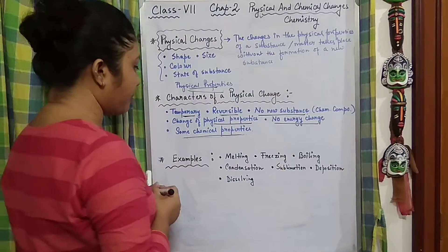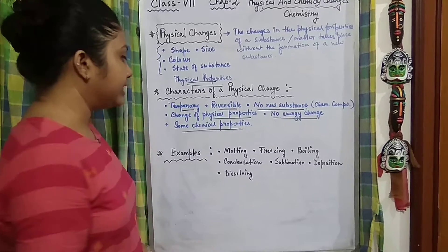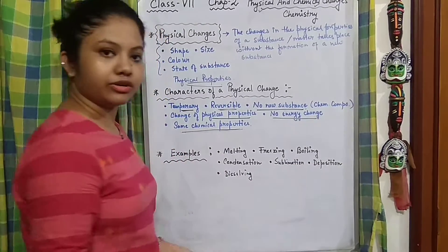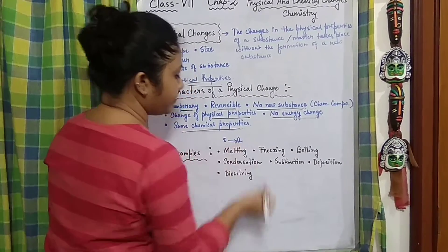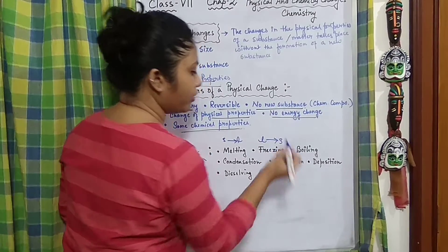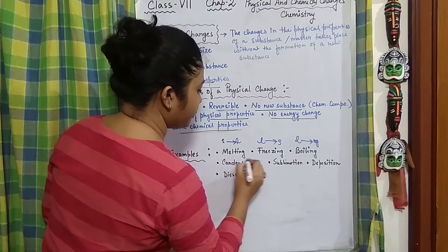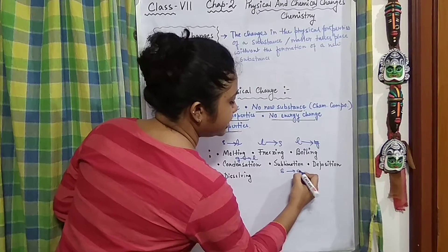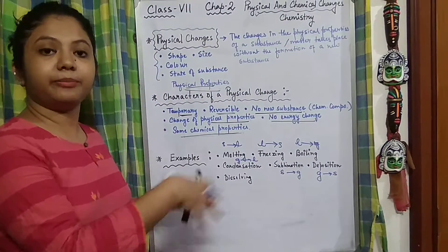Let's take some examples of processes involved with physical changes. We have already talked about melting, freezing, boiling, condensation, sublimation, deposition. What is melting? When we are converting a solid into its liquid state. Freezing is when we are converting a liquid back to its solid form. Boiling is a liquid converting into its vapor or gaseous form. Then condensation — when we are converting a gas back into its liquid form. Sublimation is where a solid directly converts into its gaseous form. And deposition is the opposite, where gas or vapor is converted back to its solid form.